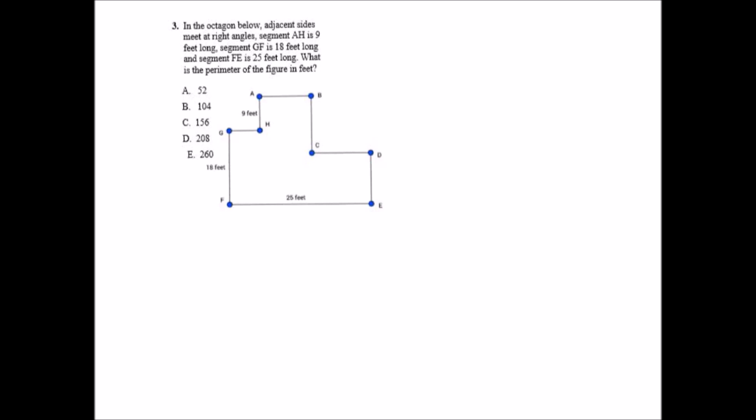In question number 3 we see the octagon below has adjacent sides and they all meet at right angles. Segment AH is 9 feet and segment GF is 18 feet. What is the perimeter of the figure in feet? The thing you need to keep in mind is whether this octagon goes this way and then up, or whether it goes up and then over. Because everything is meeting at right angles, it's still covering the same distance.